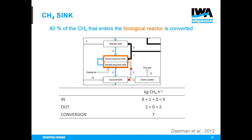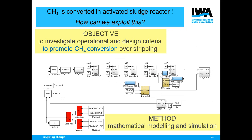Besides methane sources, we also found a methane sink on the plant — namely the biological reactor. 80% of the methane entering the biological reactor was converted, occurring in the aerated part of the tank, performed by aerobic methane-oxidizing bacteria, which I'll refer to as methanotrophs. This is definitely something we want to exploit.